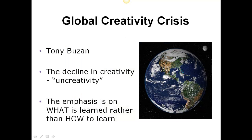Tony Bazan is the world's foremost expert on thinking visually and a leading lecturer on the brain and learning. He believes we're in a global creativity crisis because of a creativity decline in the curriculum. We're actually teaching uncreativity by focusing on what is learned rather than how to learn. This decline in the creativity of the curriculum is not natural, he argues, further pointing out that we're actually teaching our students to have their natural genius or skills taper off because of what the curriculum dictates.